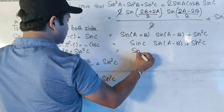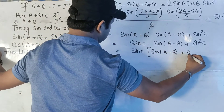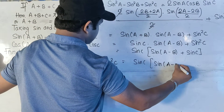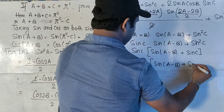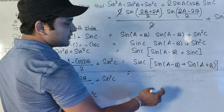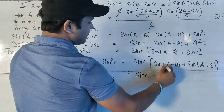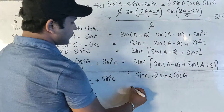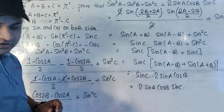We take sinC common, leaving sinC·[sin(A-B) + sinA + sinC]. Recalling the formula sinA+B + sinA-B = 2sinA cosB, in place of sin(A+B) + sin(A-B) we write 2sinA cosB, giving us 2sinA cosB sinC.